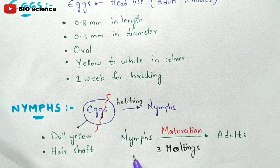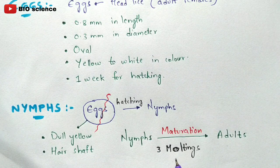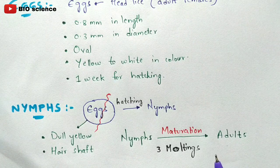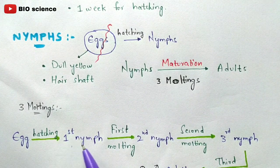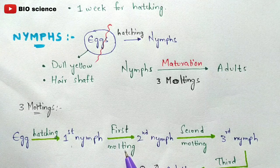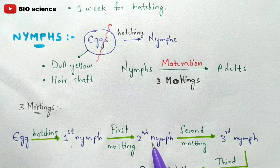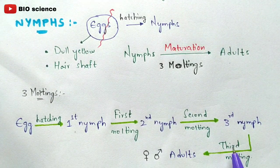The nymphs undergo a maturation process involving three molting stages to develop into adults. The first nymph undergoes first molting and develops into the second nymph. The second nymph undergoes second molting and develops into the third nymph. The third nymph undergoes third molting and develops into adults.